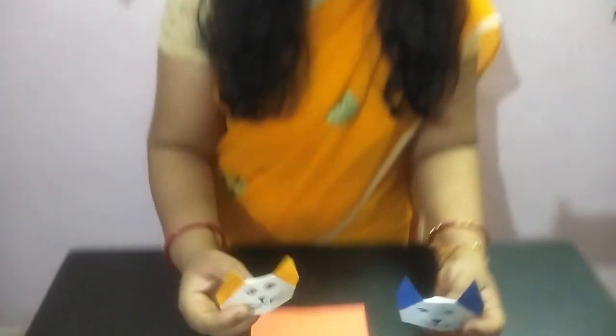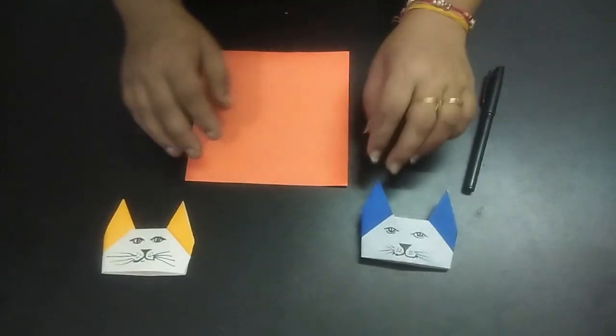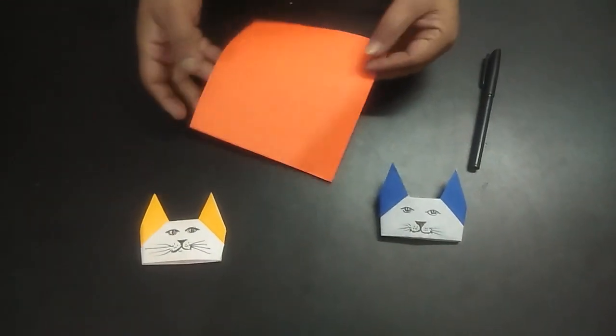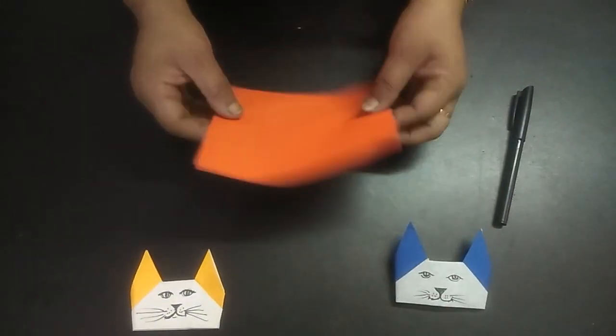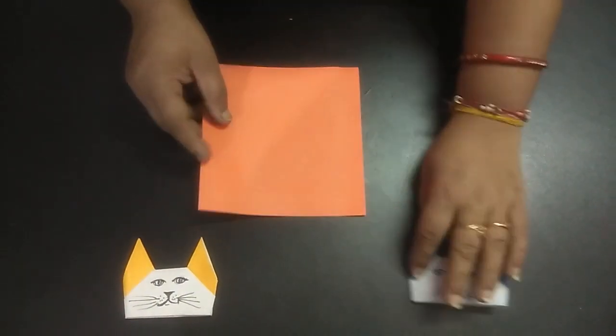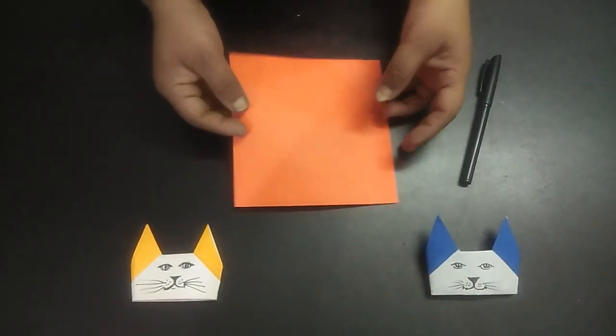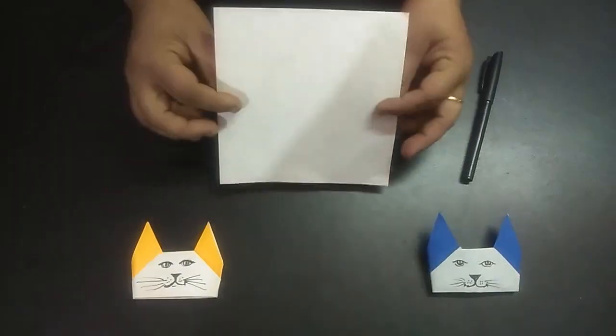Hello kids, today you're going to do an origami activity with your Sangya teacher, a finger puppet. Origami is a paper folding technique. We require origami paper, any color. The origami paper is one side colored, the other side white paper, and one black marker or sketch pen.